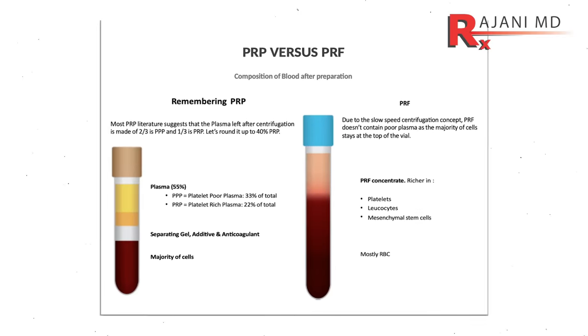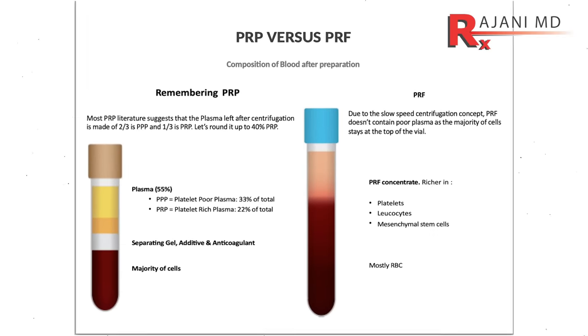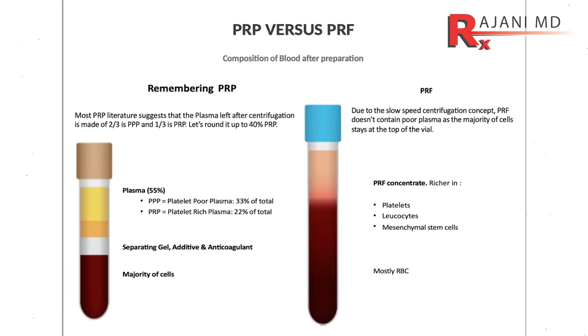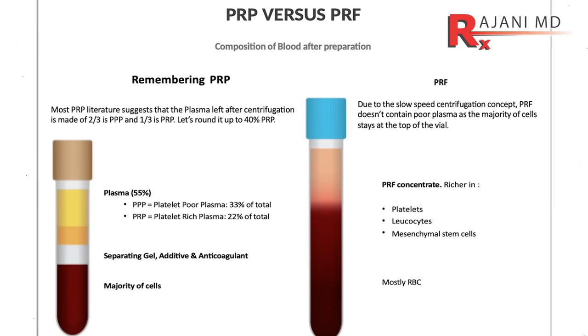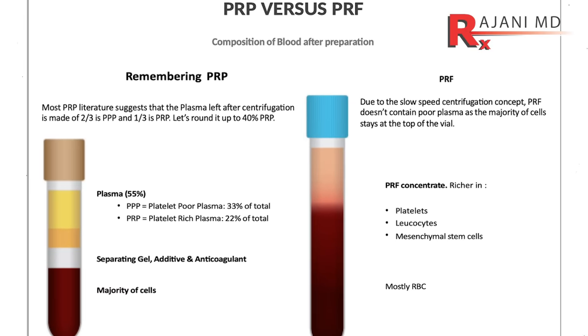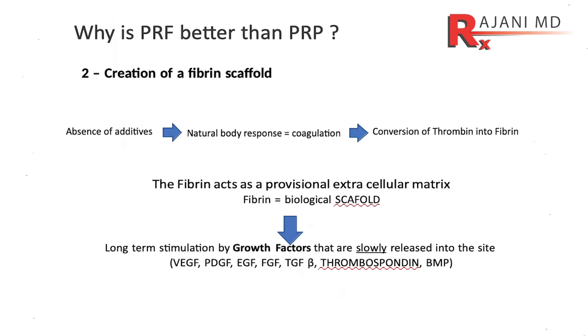PRP, or platelet-rich plasma, as you can see from this slide, has a lot of plasma at the top, whereas platelet-rich fibrin has less volume. A lot of people are hung up on this, but imagine having plasma that doesn't do very much versus a low volume of platelet-rich fibrin that is rich in white cells and a fibrin matrix.